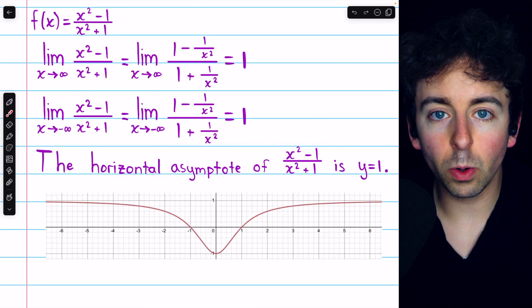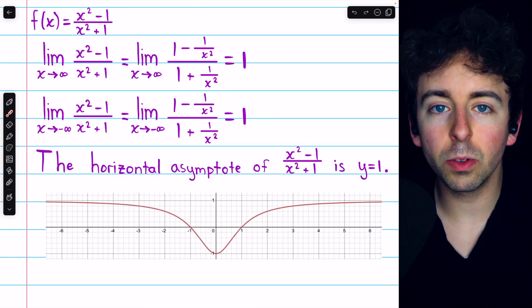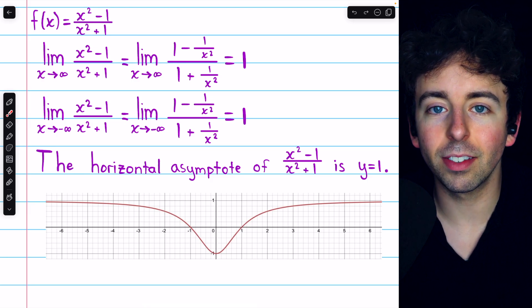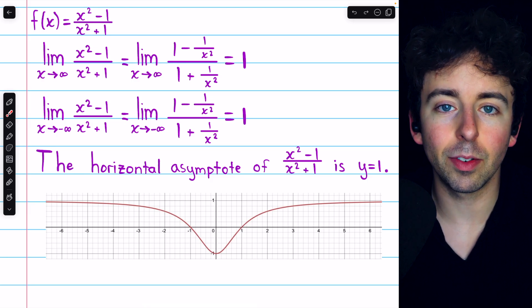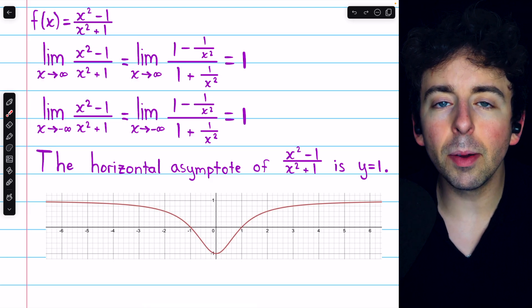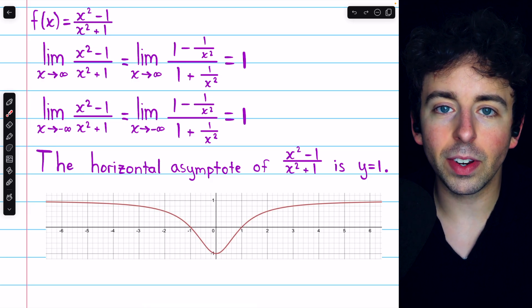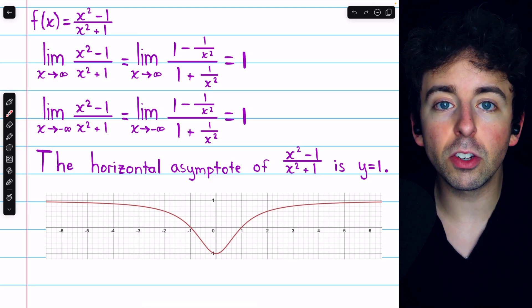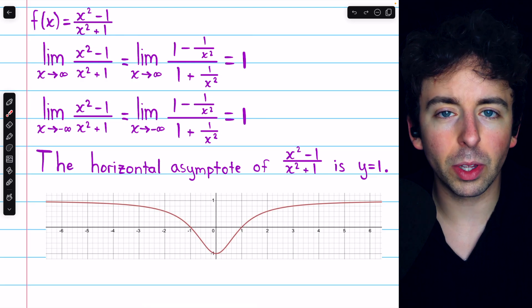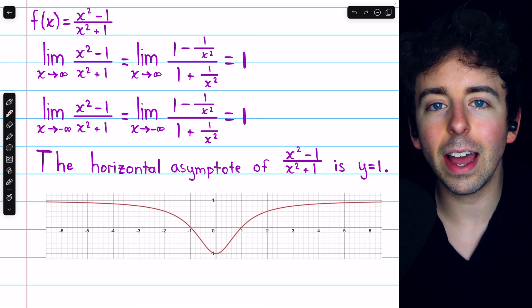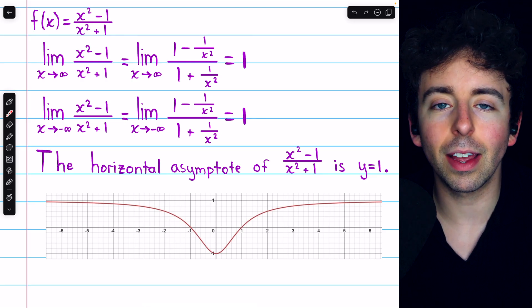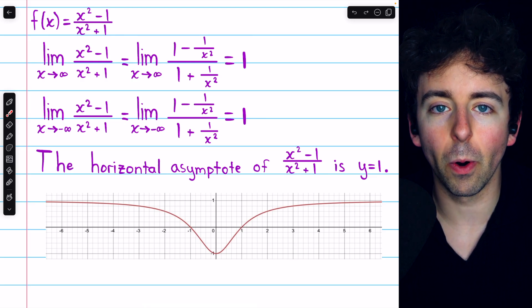So to find horizontal asymptotes, just evaluate the limits at positive and negative infinity. Let me know in the comments if you have any questions, and be sure to check out my Calculus 1 course and Calculus 1 exercises playlists in the description for more. Thanks for watching!